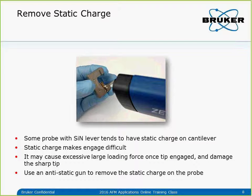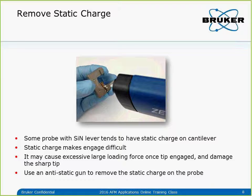Then we can mount a cantilever in the holder. We need to use a new fresh probe. I use SNLC, but you can also use SNLA or the ScanAsyst Air probe — they're all capable of this imaging and have a sharp tip. All these probes have a nitride cantilever. I found that the nitride lever tends to have a static charge on the surface. If there's a static charge, when we try to engage the tip on the surface, this long-range static force will keep bending the cantilever. As the cantilever gets closer, the static force gets stronger and the cantilever keeps deflecting.